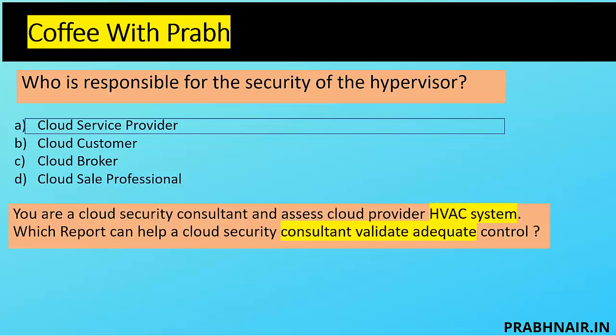Next question: you are a cloud security consultant assessing a cloud provider's HVAC system — Heating, Ventilation, and Air Conditioning. This system cools the servers, improving availability. Effective cooling manages cooling parameters in the data center, improving hardware longevity, enabling better services, and achieving better uptime. Which report can help a cloud security consultant validate the adequate controls specific to the HVAC system?